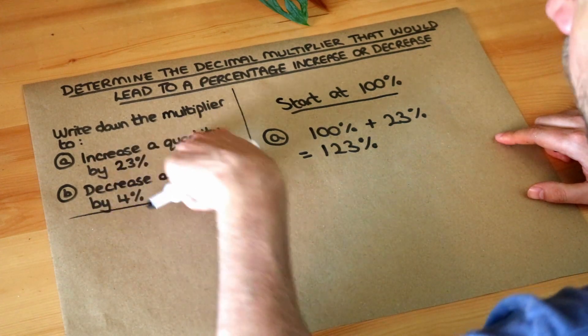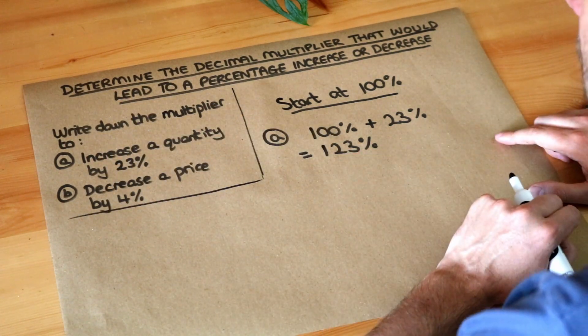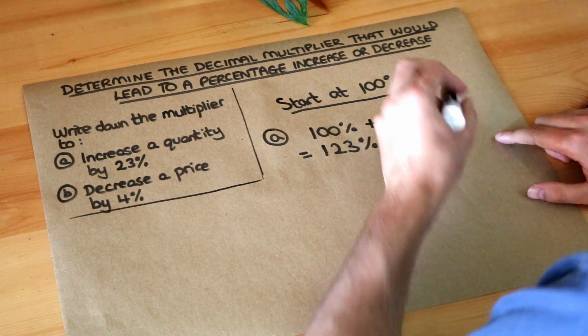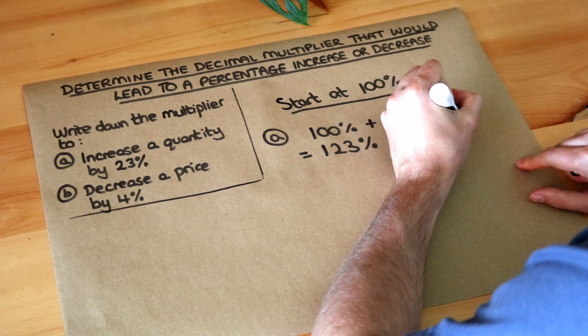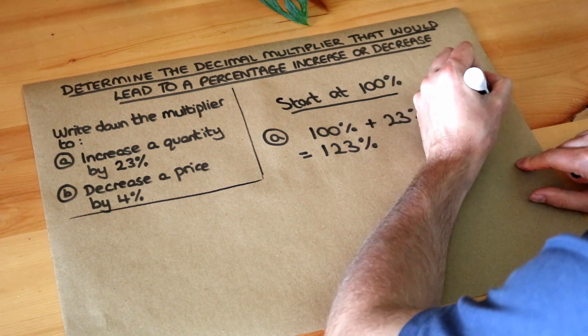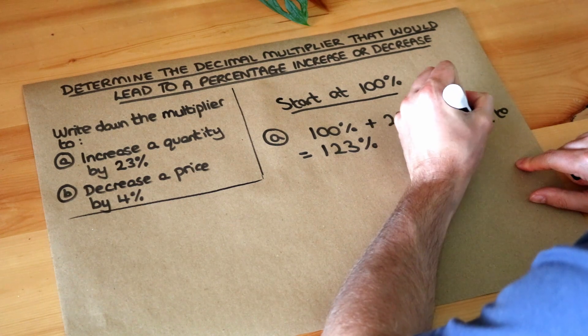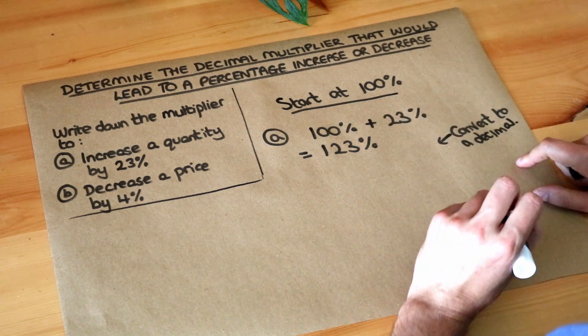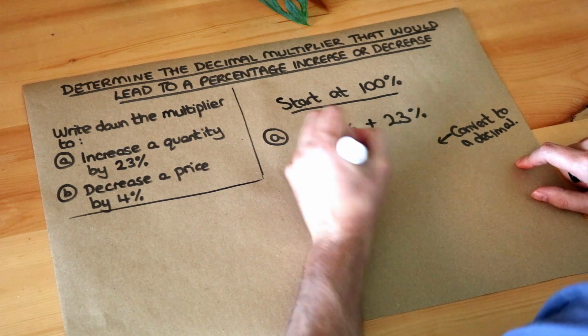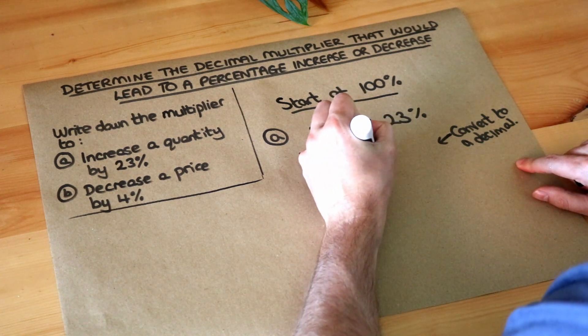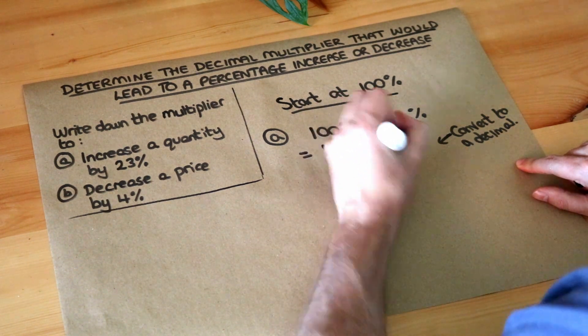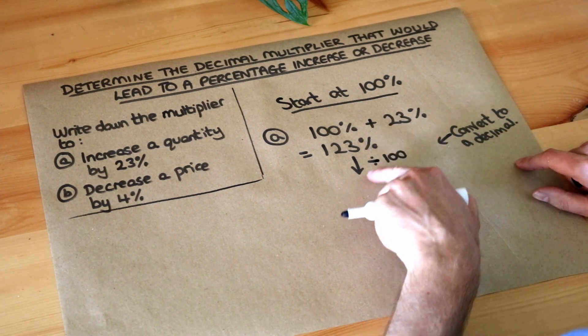So the value of this item, whatever it is, is now 123% of its value. And then you just convert that to decimal form. Now to convert a percentage to a decimal, we explored that in a previous video, we just divide it by 100. That's how you go from a percentage to a decimal.